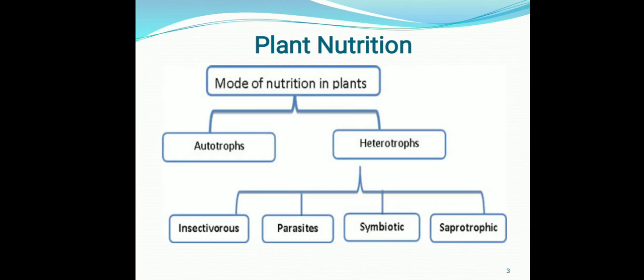They are also known as autotrophs — for example, green plants. Another mode of nutrition in plants is the heterotrophic mode of nutrition, which means those organisms which are dependent on other plants or animals for their food requirements. In plants, heterotrophs are further categorized into four categories: insectivorous plants, parasitic plants, symbiotic plants, and saprophytic plants.